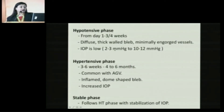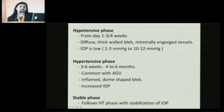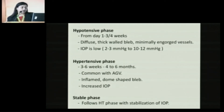After implantation, there can be various phases of changes in the IOP. There can be a hypotensive phase from day one to three to four weeks, wherein there is a diffuse thick-walled bleb with minimally engorged vessels and the IOP is reasonably low. There can be a hypertensive phase, which is more common with non-valved devices because the tube is ligated — and if you have not made the vents, this is very common. It is also common with AGVs because aqueous starts flowing immediately and there is an immediate granulomatous and capsular reaction. It can occur three to six weeks or four to six months, with an inflamed dome-shaped bleb and increased IOP.